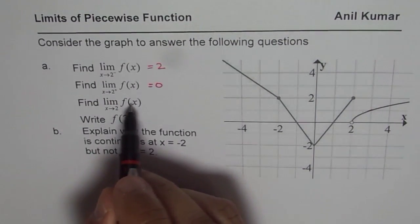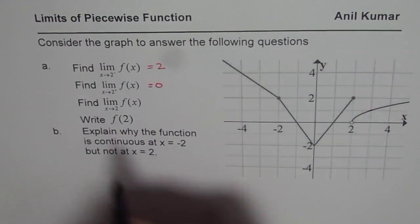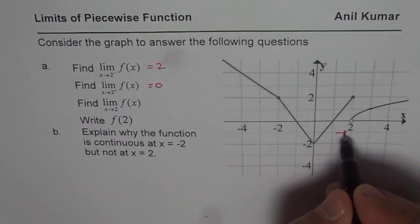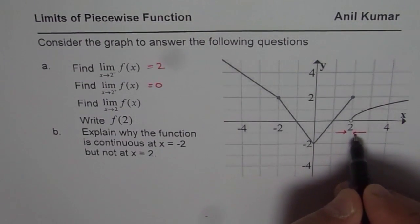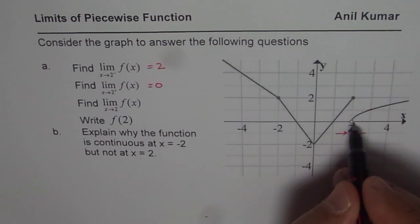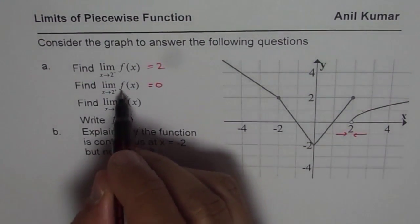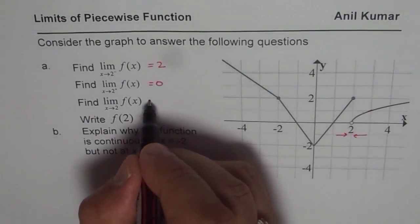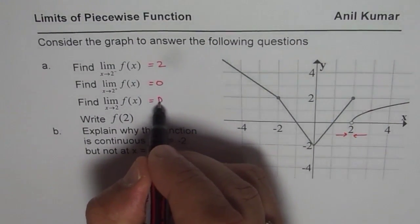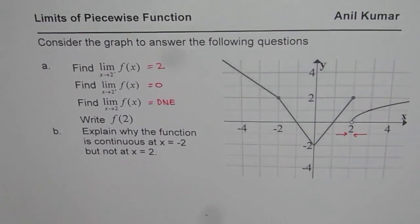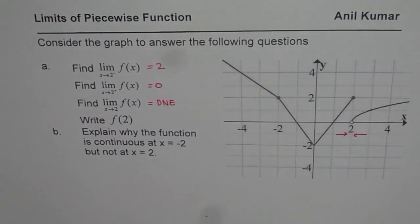Now, the limit of the function as x approaches 2: as you approach 2 from both sides, you see you approach different values. Since these two values are not the same, this limit does not exist.